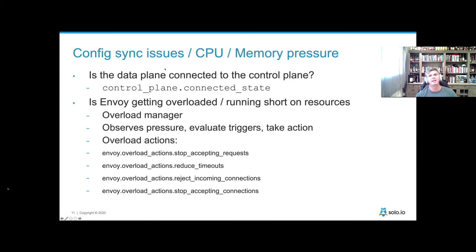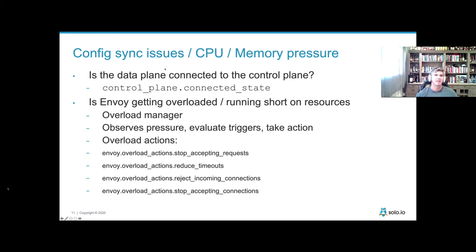Another consideration is what happens when the Envoy proxy starts to come under severe load. We don't want the proxy to lock up and behave in an unpredictable state. So we can set things like the overload manager in Envoy and observe it — monitoring the memory or CPU pressure Envoy is under, and specifying what it should do when it gets to certain thresholds. Should it stop keep-alive on certain connections? Should it stop accepting or start shedding requests? The overload manager lets you reason about and understand what's happening under pressure.